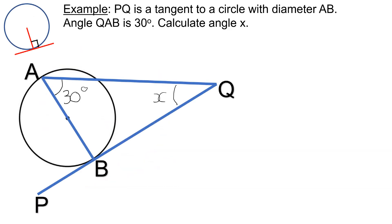Here's an example of a question that uses this idea. PQ is tangent to a circle with diameter AB, angle QAB is 30 degrees, and we want to find angle X. We know that PQ is tangent to a circle and AB is a diameter, so the center to B is a radius. So this angle here must be 90 degrees, because a tangent meets a radius at 90 degrees.